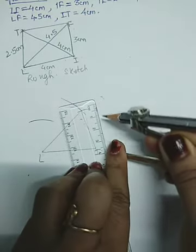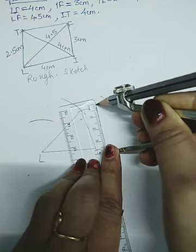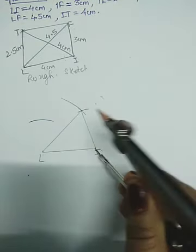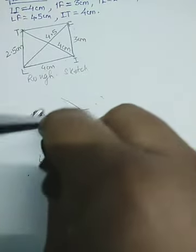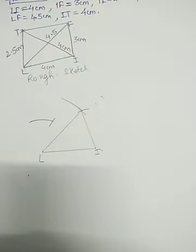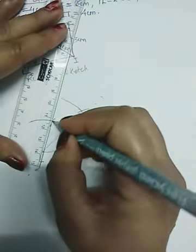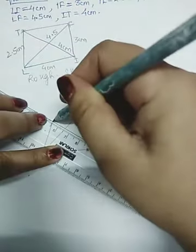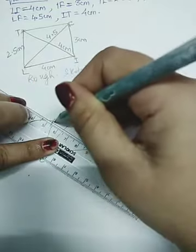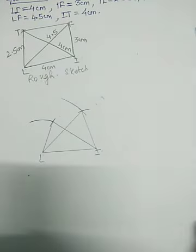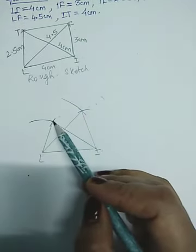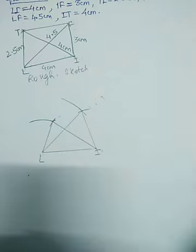For another diagonal, take length of 4 cm. Now we can see we have got 2 arcs here. We will join these with the help of a ruler.